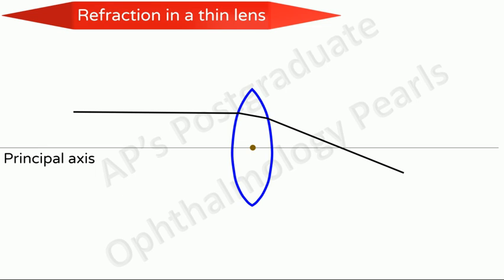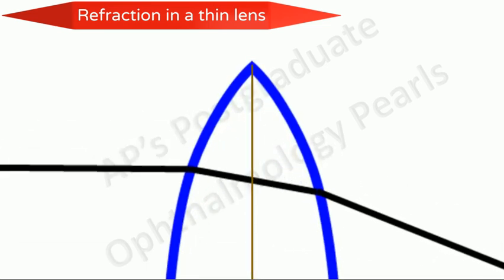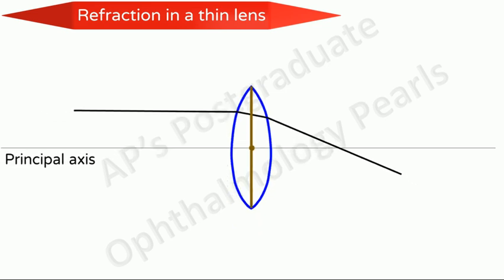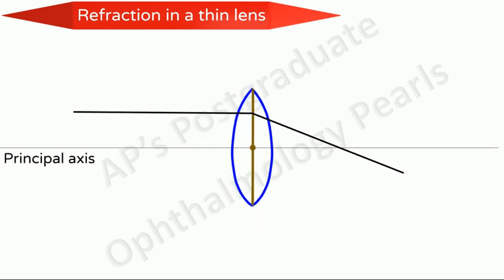Refraction at the lens occurs at both surfaces. For purposes of convenience, we can consider the refraction to occur at the principal plane, which represents refraction at both surfaces of the lens. The point where the principal plane intersects the principal axis is called the principal point. In a thin lens, the principal point and the nodal point coincide with each other.